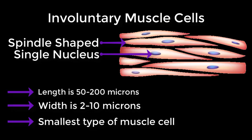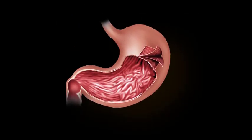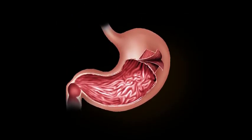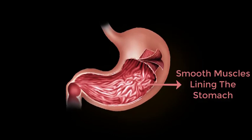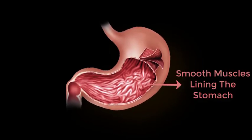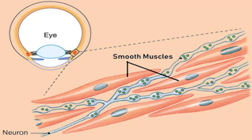Smooth muscle cells are present in muscular layers of vessels and within internal organs, so they are responsible for moving and contracting the stomach, bowels, and blood vessels. They are also present in the eye and contract to change the shape of the lens, causing the eye to focus.